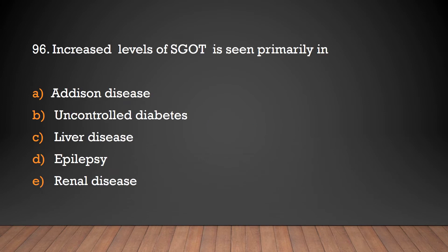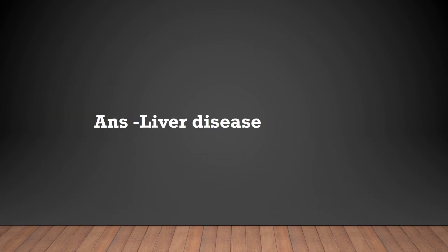Increased levels of STD is seen primarily in: Addison disease, uncontrolled diabetes, liver disease, epilepsy, renal disease. Answer: Liver disease.